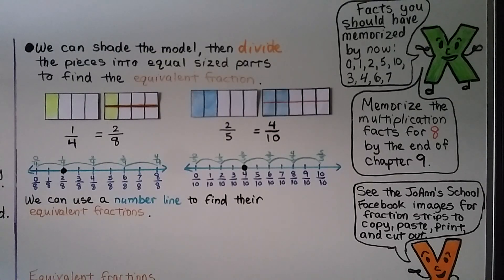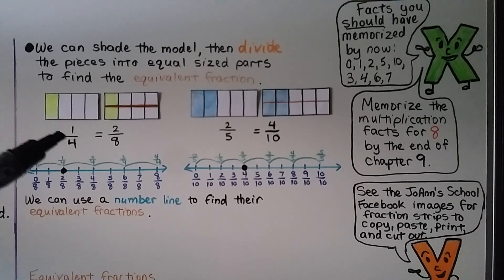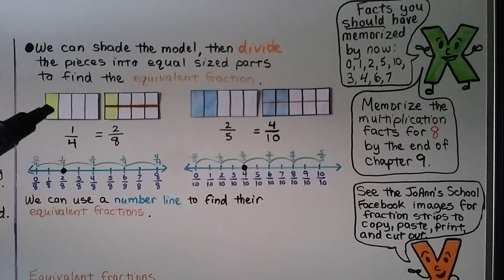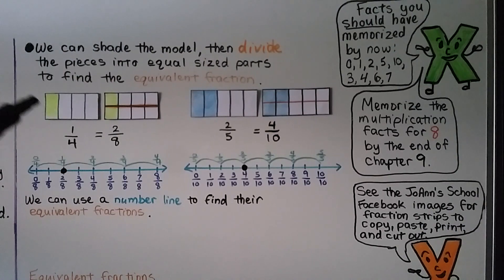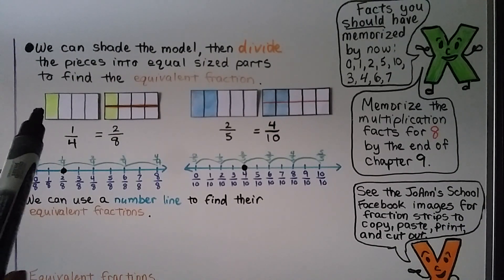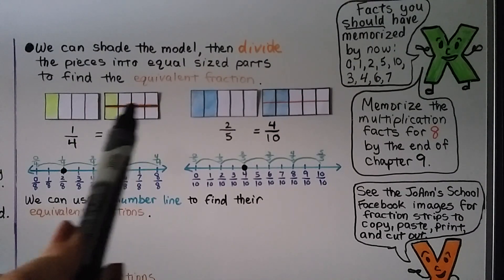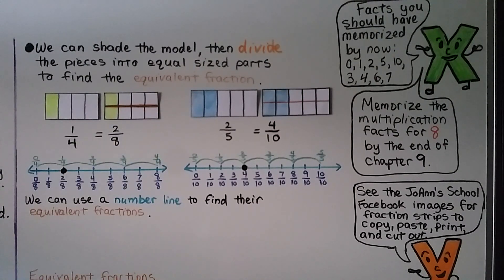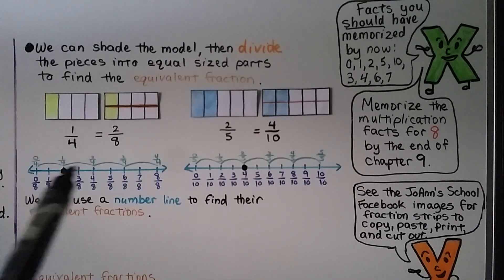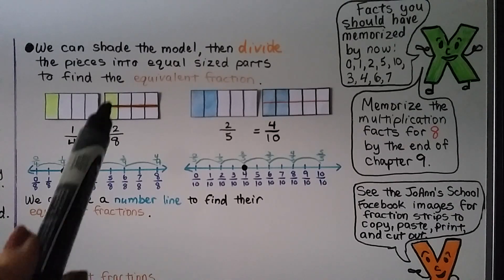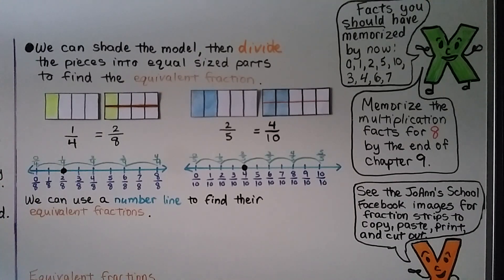We can shade the model, then divide the pieces into equal-sized parts to find the equivalent fraction. So here we have one-fourth — this rectangle is split into four equal parts and one is shaded. That's one of four. We can draw a line going vertically across this way and split it into eight equal parts, and we can see that one-fourth is equal to two-eighths. The same amount is shaded.